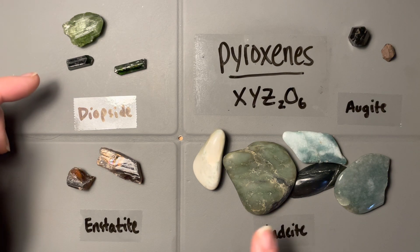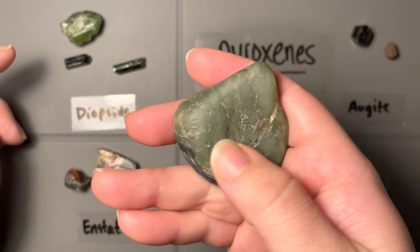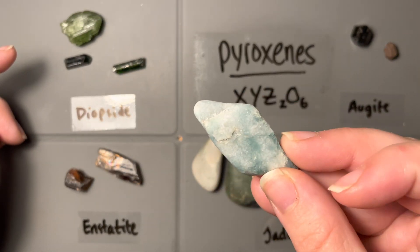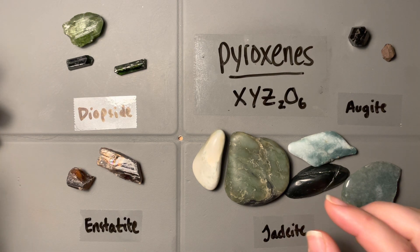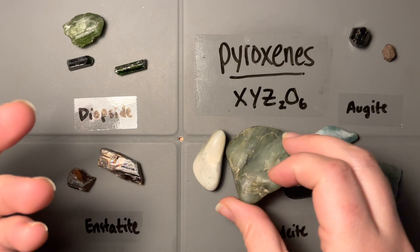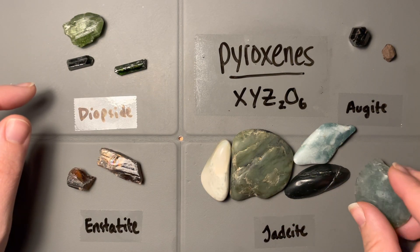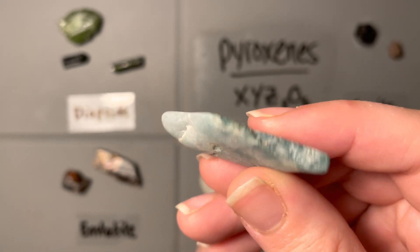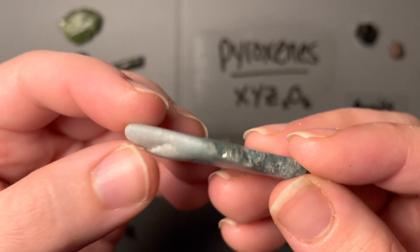Jadeite should be the easiest one to pick out of this group. The only samples we have are in pebble form — really smooth. Because they've been sanded down from wear and tear, they don't look like they have a vitreous luster; it looks a little more earthy, maybe slightly waxy. That can happen if it's been rolling in a river or embedded in sedimentary rock. In general we'd expect vitreous luster, but one thing that sets jadeite apart is that cleavage is really hard to see, mainly because the crystals are almost microcrystalline — we can't distinguish a singular crystal.